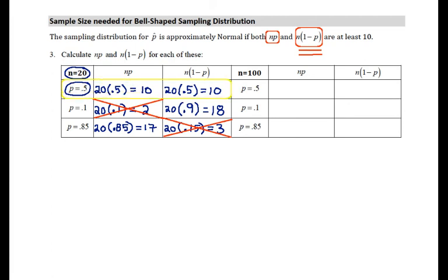Now let's do all of these calculations with n equals 100. 100 times 0.5 is 50. 100 times 0.1 is 10. 100 times 0.85 is 85. Then over on this side, 100 times 0.5 again is 50. 100 times 0.9 is 90, and 100 times 0.15 is 15.